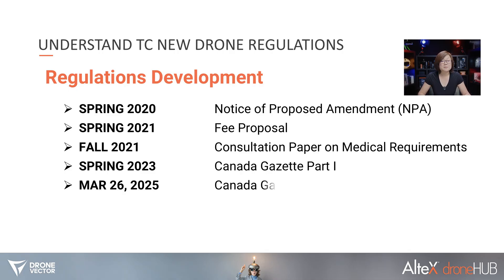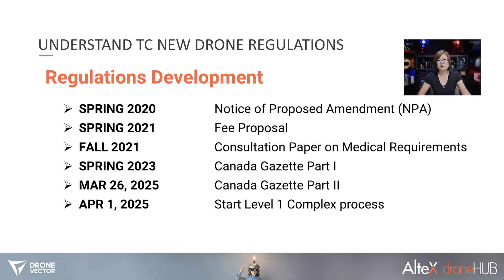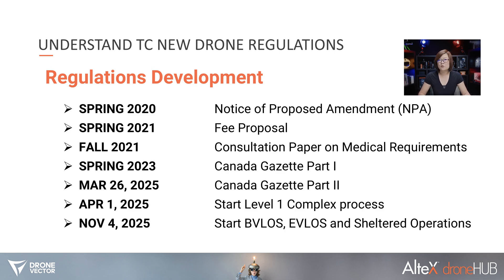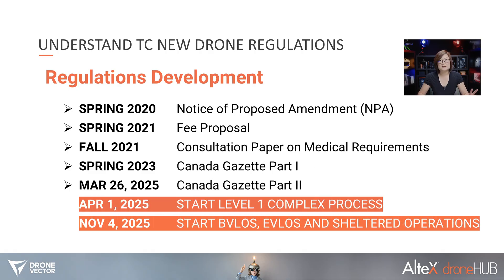Following that is the May 26 announcement and publication of Canada Gazette Part 2. That includes the April 1, 2025 date which allows some regulations to be in effect for pilots to begin the Level 1 complex process, and also includes the November 4th date. These are the two important dates for everyone looking to pursue BVLOS, EVLOS, or sheltered operations. From April 1 is when we can start the preparation process to get Level 1 complex and gear up for BVLOS, EVLOS, and sheltered operations to begin on November 4th of this year.